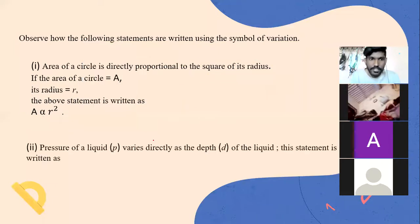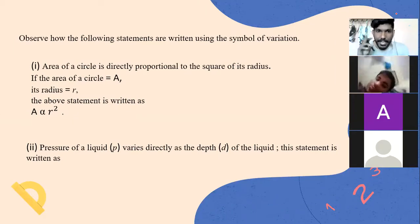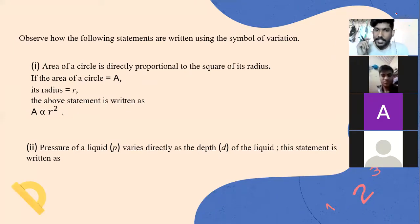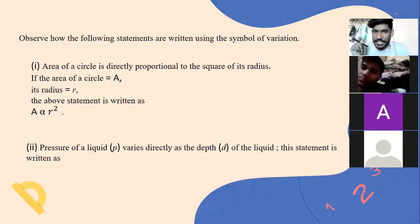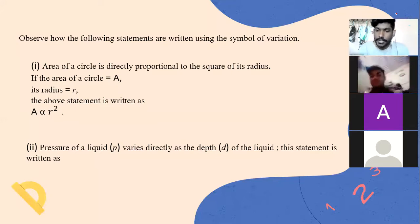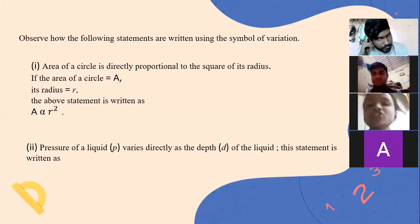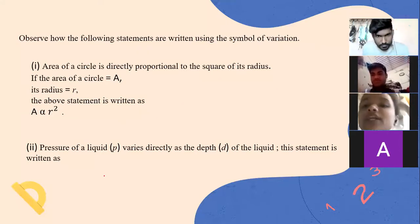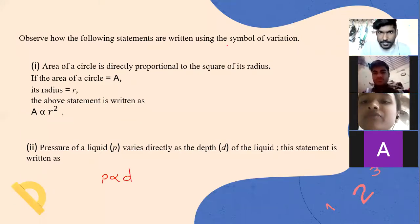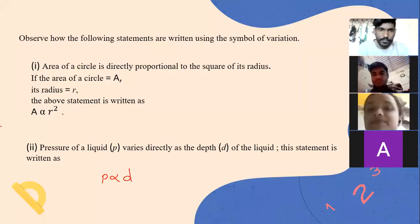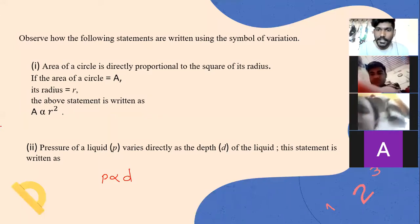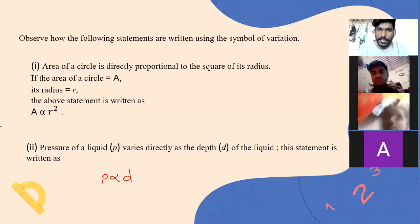The second example: 'Pressure of a liquid, denoted by p, varies directly as the depth d of the liquid.' We write this as p directly proportional to d. Given a statement, you have to write it in the direct proportion symbolic form — that is the way we do it.